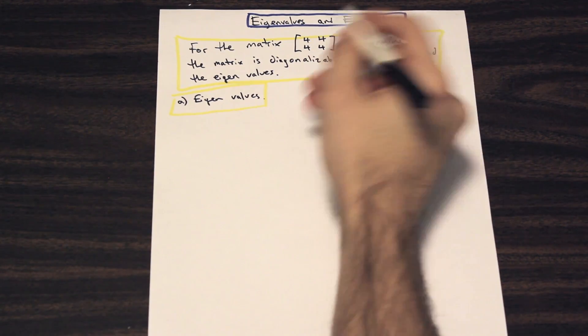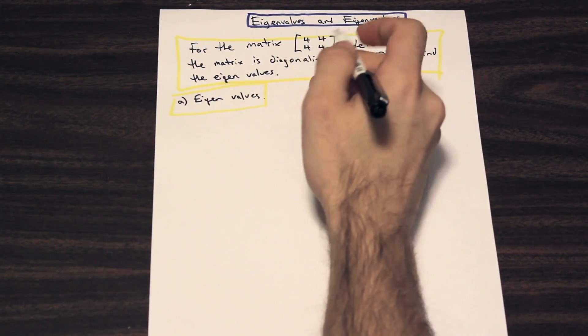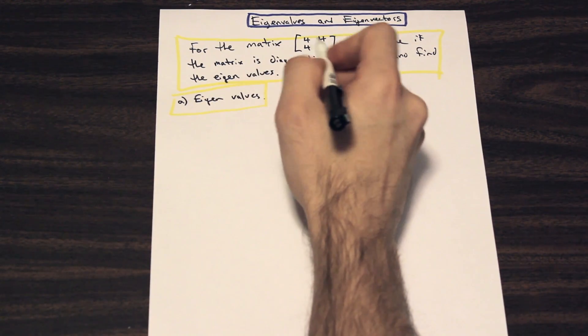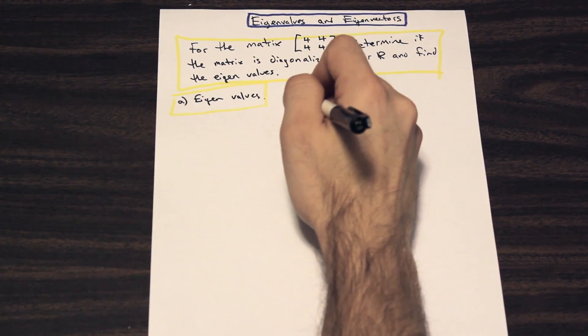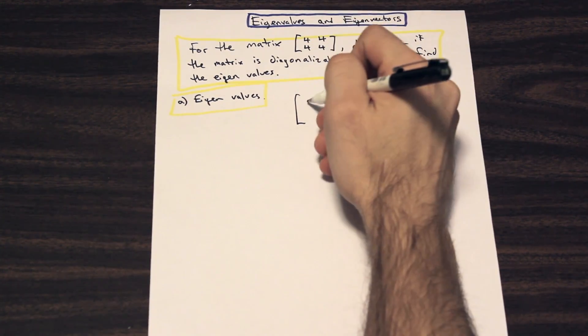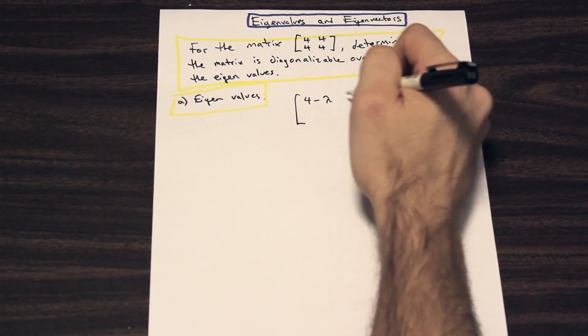So let's take a look. We have this matrix here: [4 2; 4 4]. We're going to go ahead and modify that matrix. For the diagonal here, we're going to subtract each value by lambda.